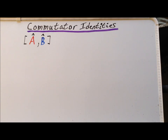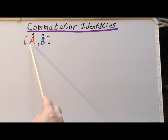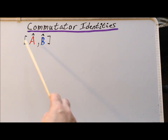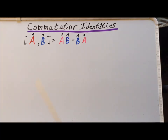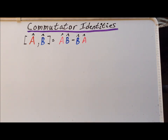We denote the commutator by putting the two operators involved — operator A to the left and operator B to the right — within brackets, and by definition this is equal to AB minus BA. If A and B are said to commute, then the commutator AB minus BA will be identically equal to zero.